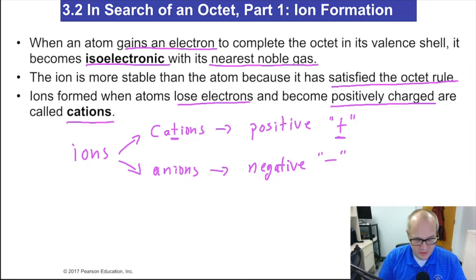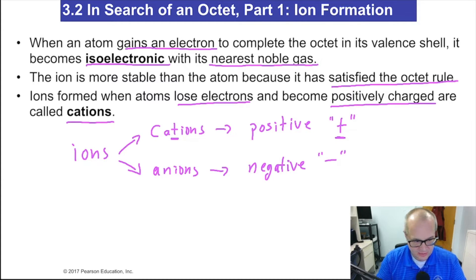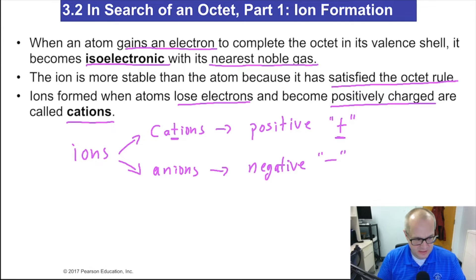Atoms will either gain or lose electrons to satisfy the octet rule. Cations are the positively charged versions — atoms that lose electrons. Anions are the negatively charged versions — atoms that gain electrons.